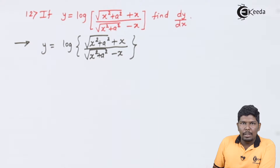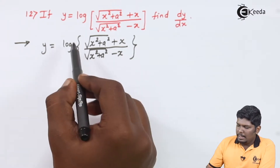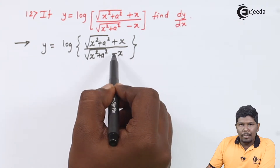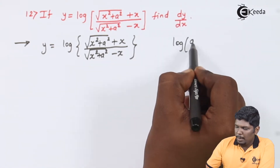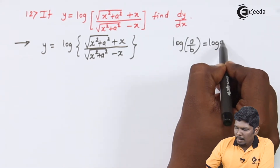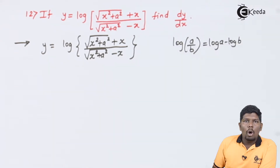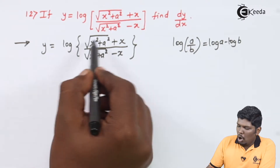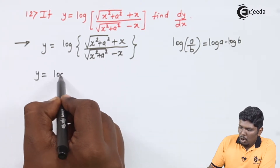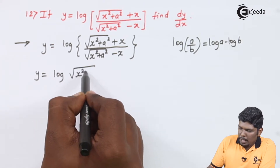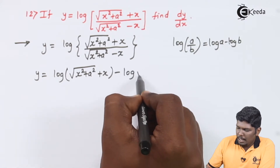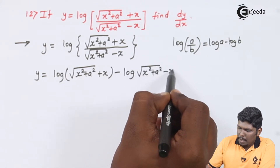To solve this directly becomes very lengthy. This can be solved by the u by v rule, but we will simplify it using the formula log a by b, which equals log a minus log b. Always remember, whenever we have very big expressions, try to avoid the u by v rule as it leads to complications. So we get: log of under root x squared plus a squared plus x, minus log of under root x squared plus a squared minus x.